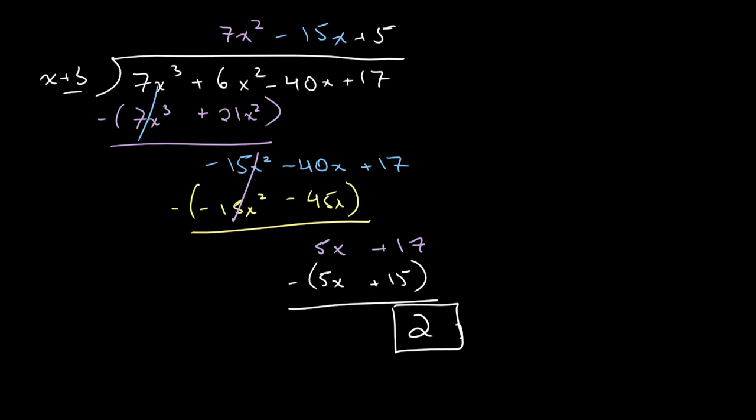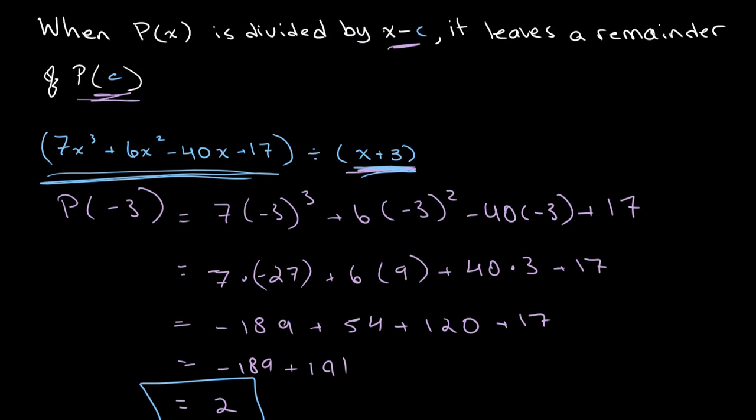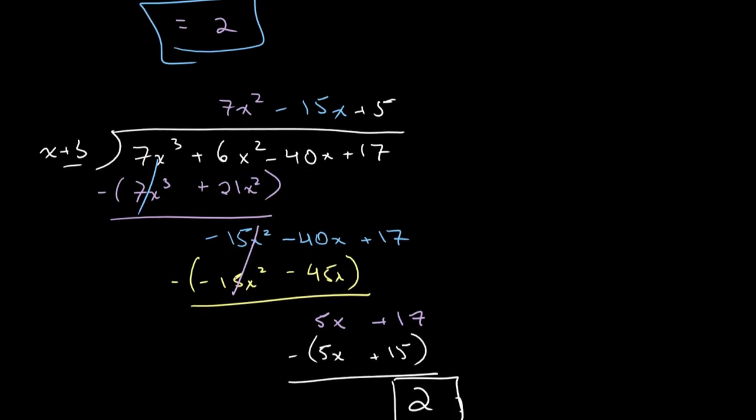So as you can see, the remainder that we get when we did long division was the same as the value of P(c), or in this case, P(-3). Okay, so that's simple enough.